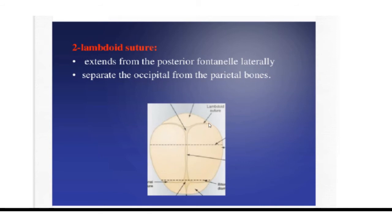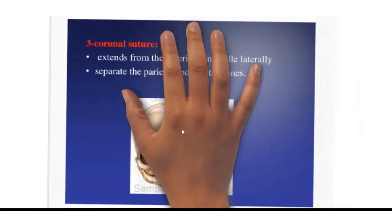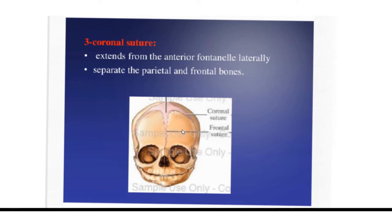The lambdoid suture separates the occipital bone from the parietal bones, and the posterior fontanelle is located at its junction. The third suture is the coronal suture, which is also a transverse suture. It separates the frontal bones from the parietal bones.